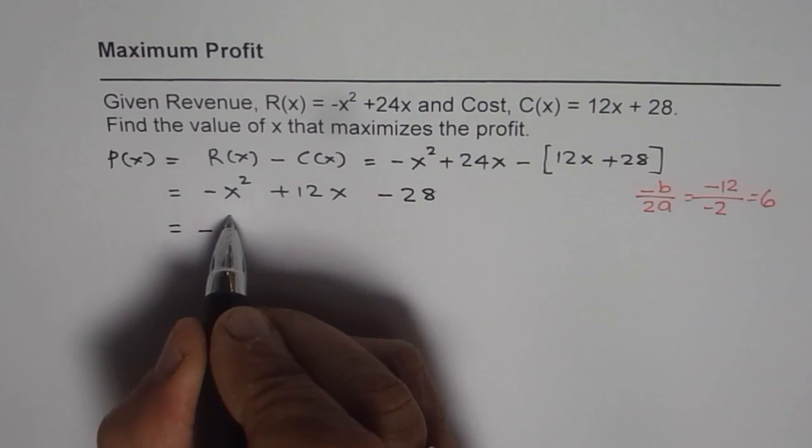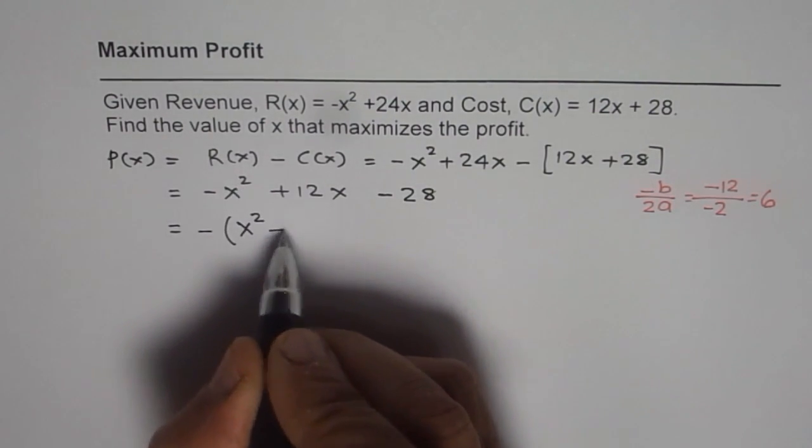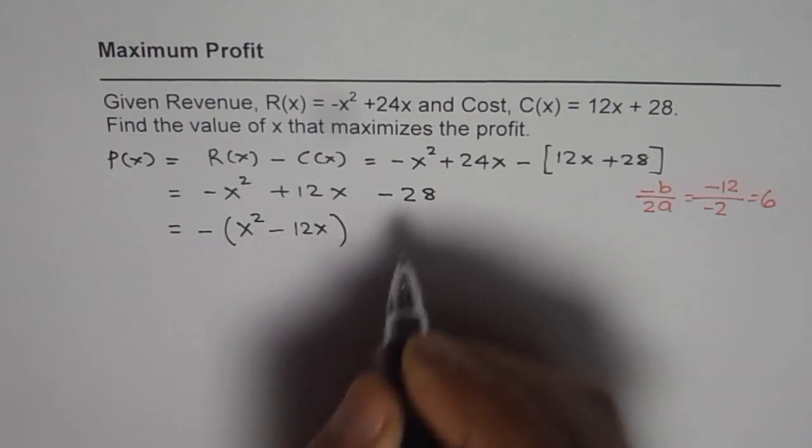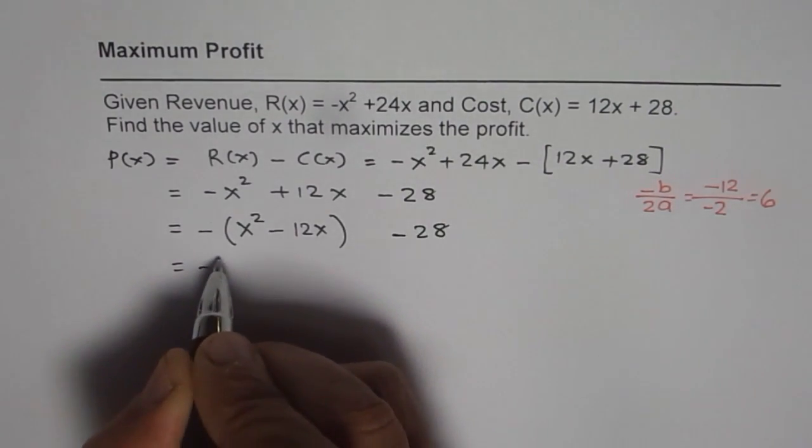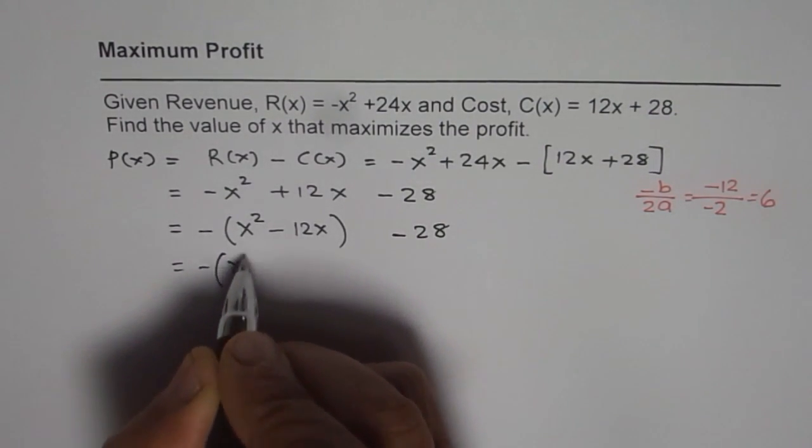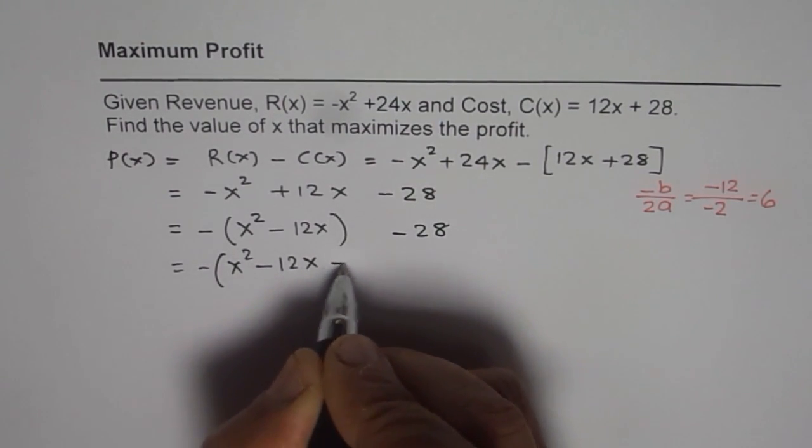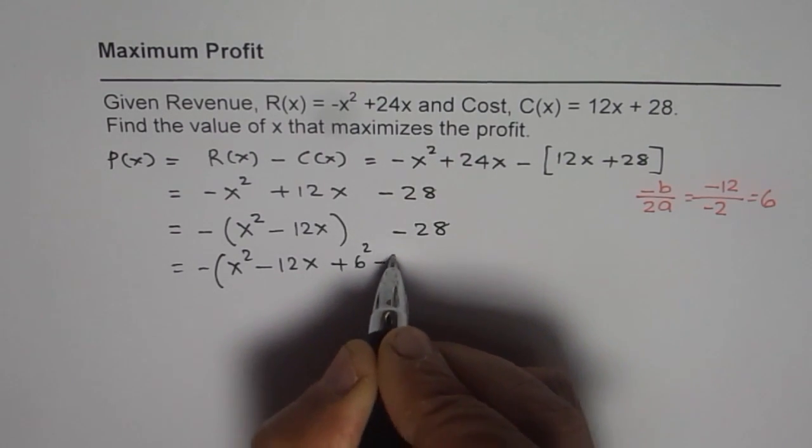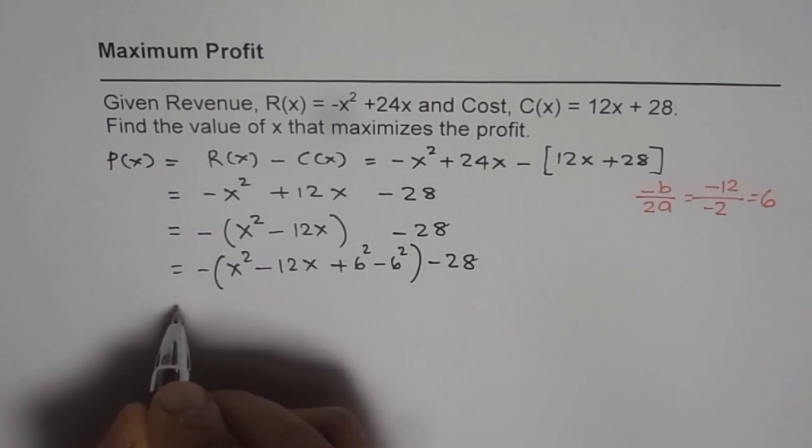So we can take minus common factor. So we are left with x² - 12x - 28. Now what is half of 12? Half of 12 is 6. So we will do plus 6² minus 6². That is what we do in completing the squares minus 28.